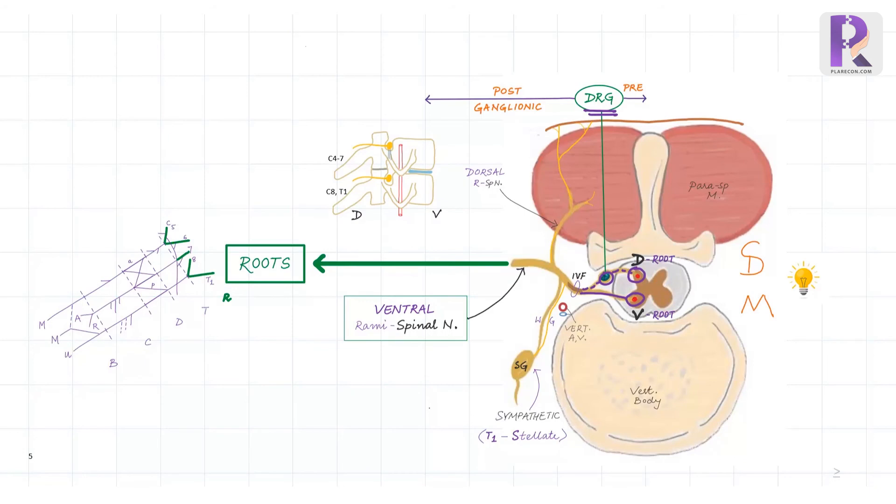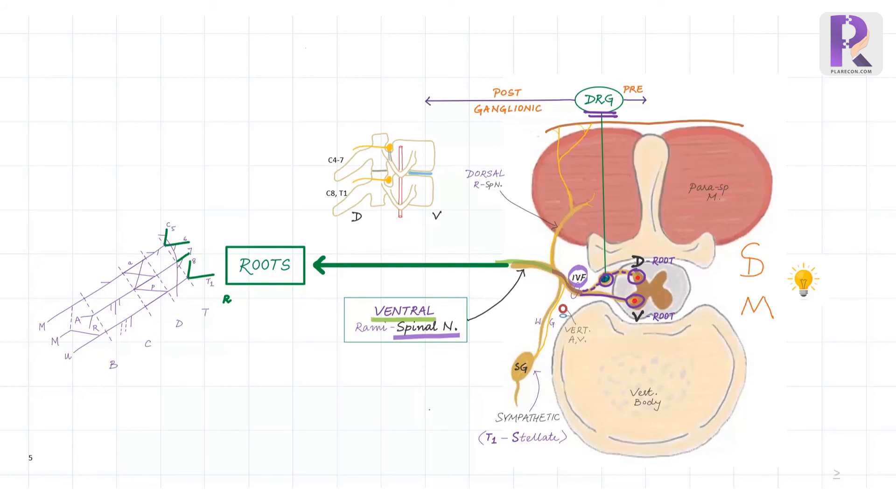Now the sensory and motor fibers join to form the mixed spinal nerve which exits the intervertebral foramen and divides into the ventral rami and the dorsal rami. This ventral rami of the spinal nerve represents the roots of the brachial plexus and shouldn't be confused with the ventral root. The dorsal rami supplies the paravertebral muscles and a strip of midline back skin.